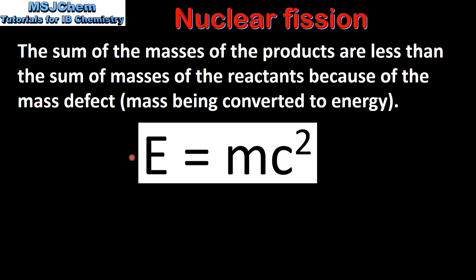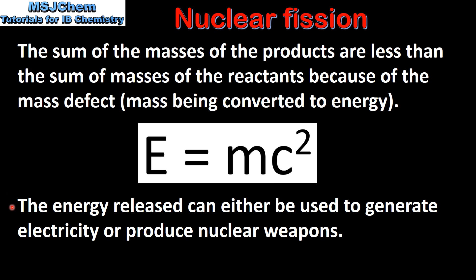We can use the equation E equals mc squared to calculate the energy released during a nuclear fission reaction, where m is the mass defect and c is the speed of light. The energy released can either be used to generate electricity or produce nuclear weapons.